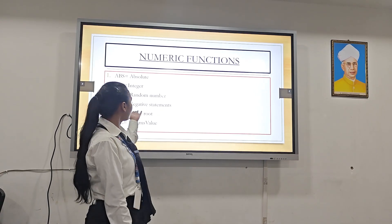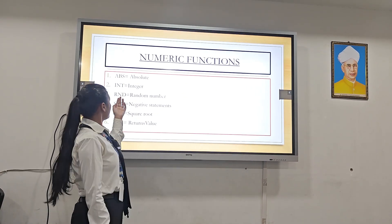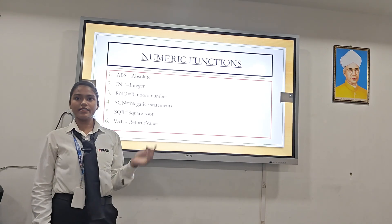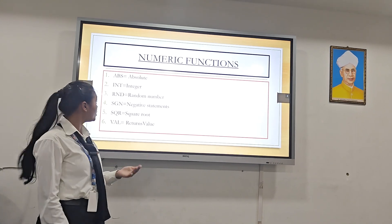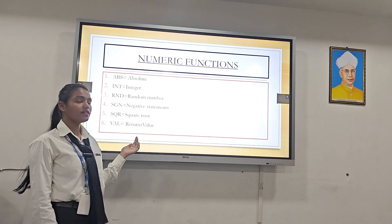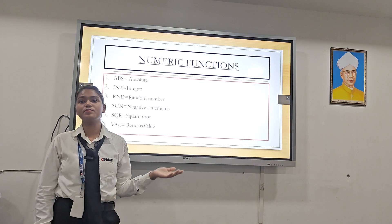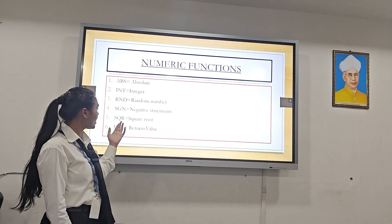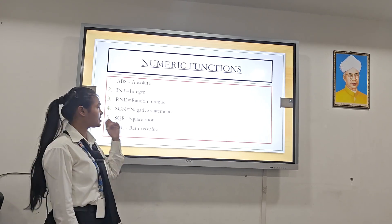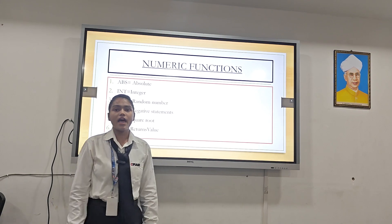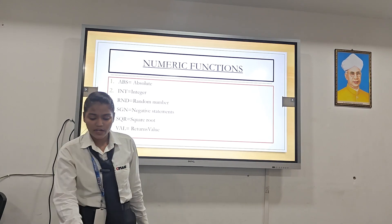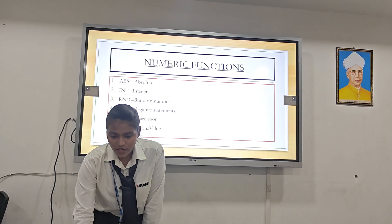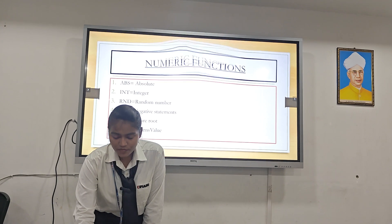Here are the numeric functions. Examples include: abs, which stands for absolute; int, which is integer; rnd, which gives a random number; sgn, which is for sign/negative statements; sqr, which is square root; and val, which returns a value.